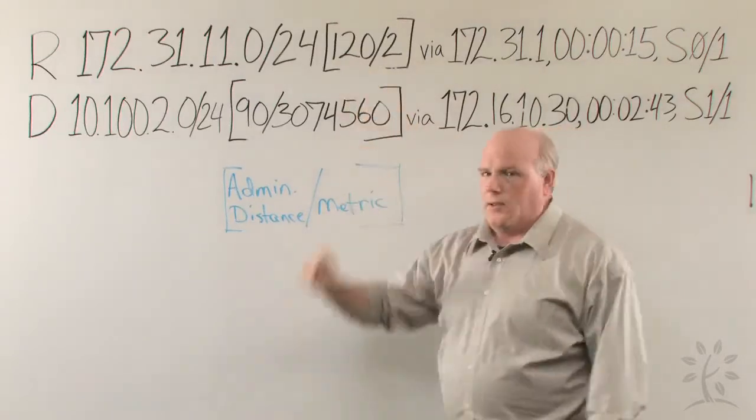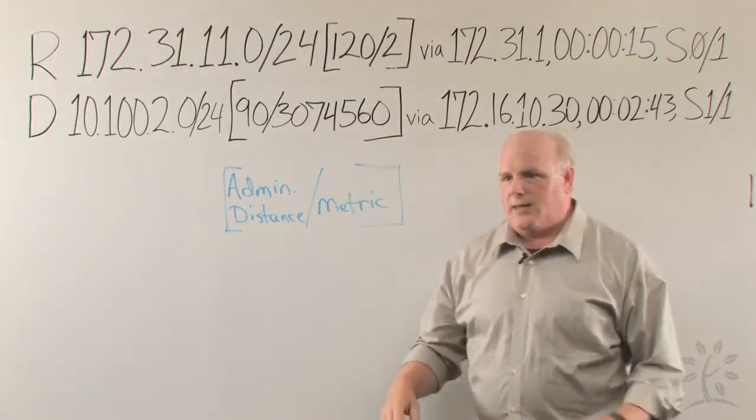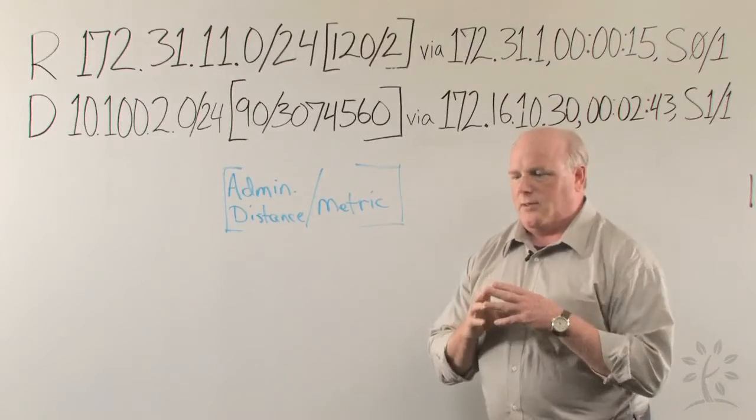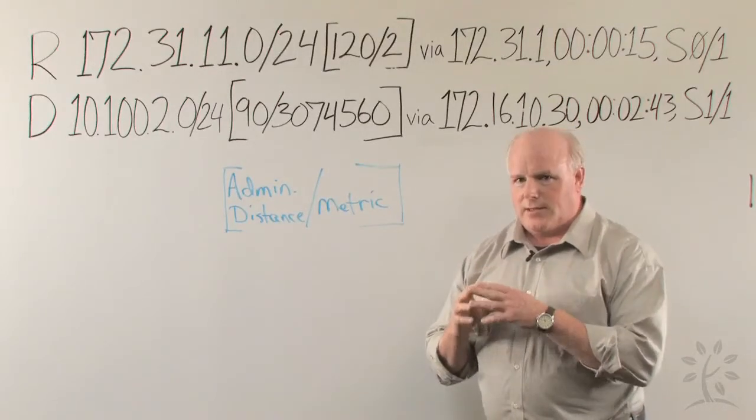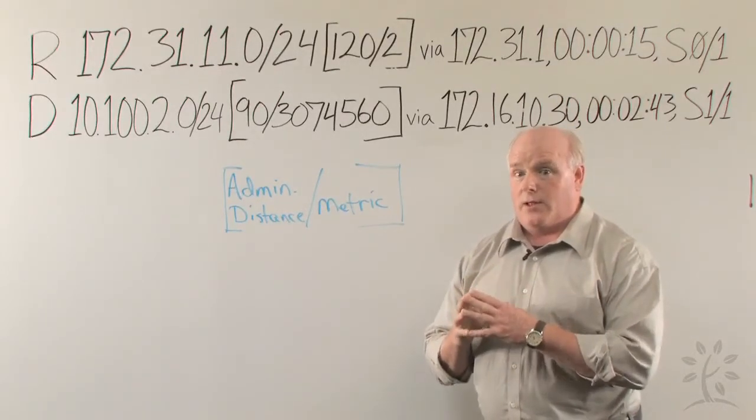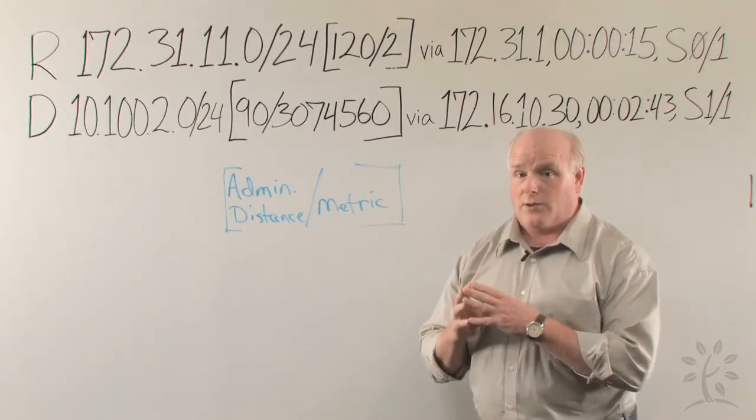The 120 is the administrative distance. That is a little bit different thing. That's the administrative distance which is how we calculate the reliability of routing protocols—routes and routing protocols.